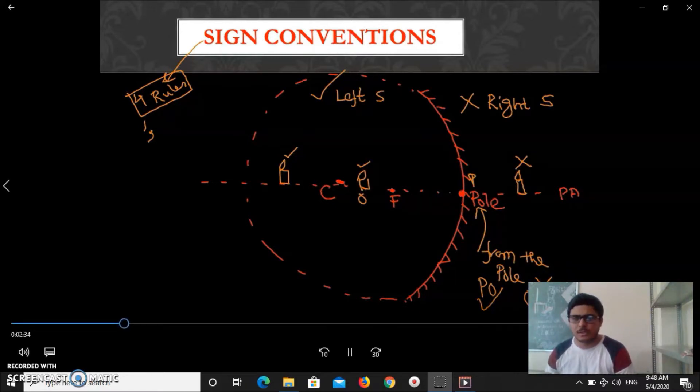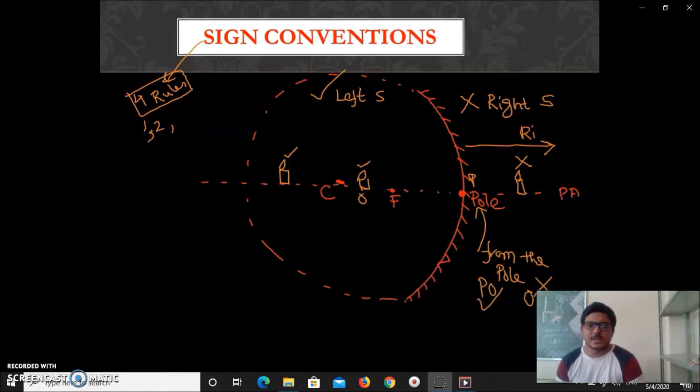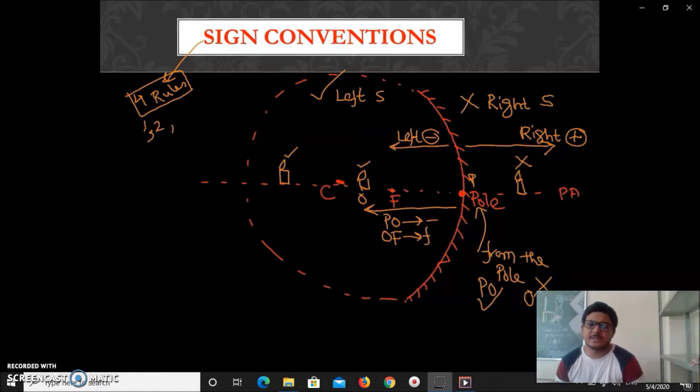Rule three is any distance that is right side of the mirror will be positive, and if it is left side it will be negative. So left side we have object distance here, O-P negative. Left side we have focal distance P-F, it is also negative.